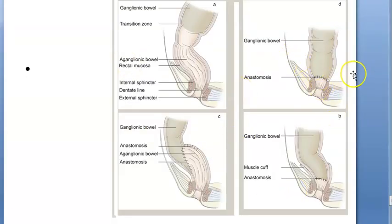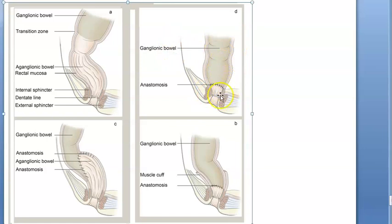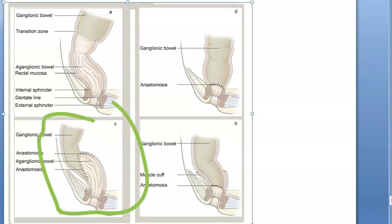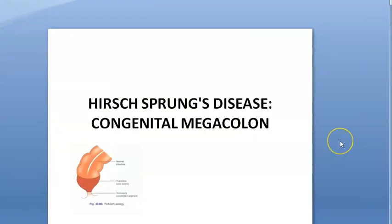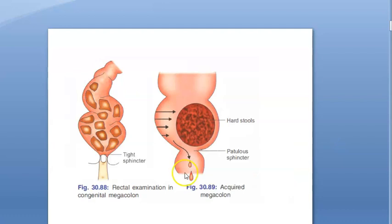Other surgical options shown include direct anastomosis of the ganglionic segment down, and the Soave mucosectomy procedure. In summary, Hirschsprung's disease — congenital aganglionic megacolon or primary megacolon — involves a section of colon without nerves, preventing fecal matter from passing forward, causing dilation.